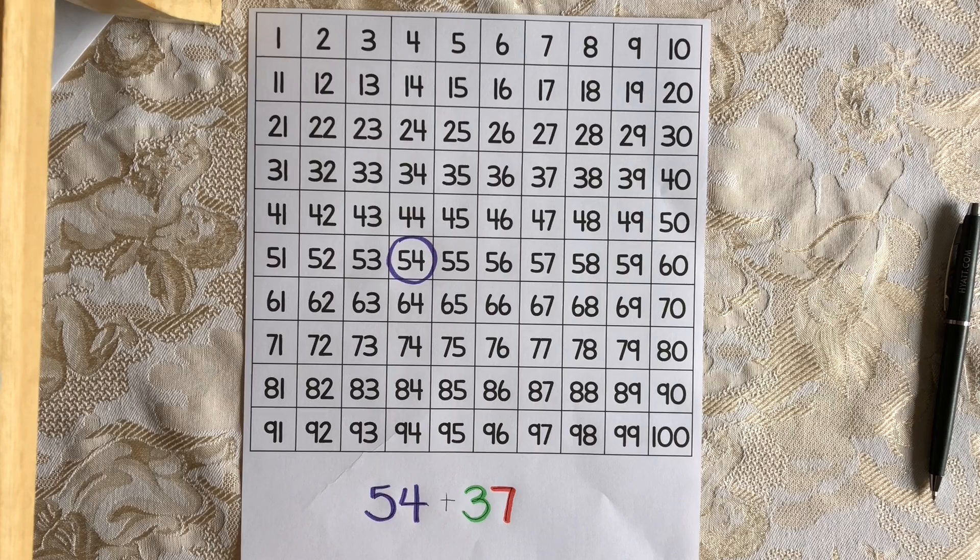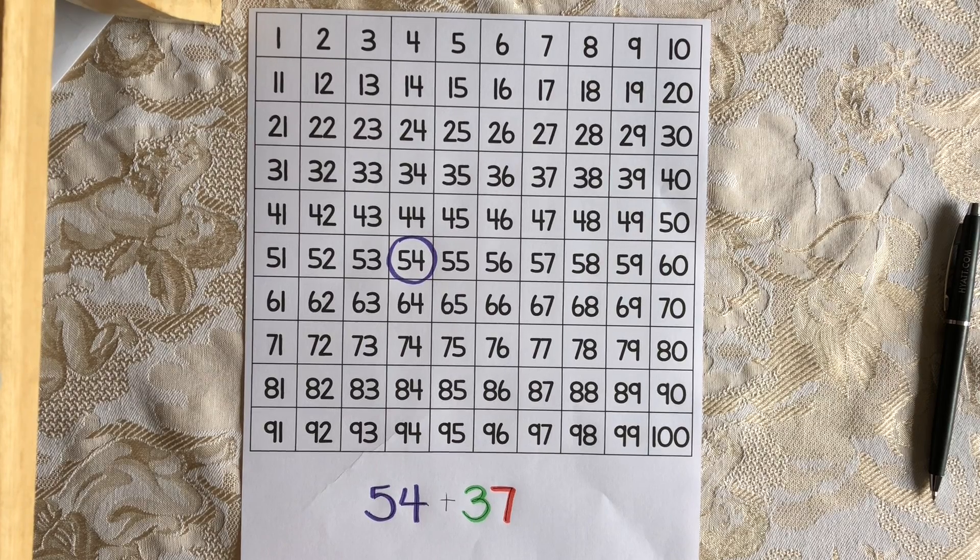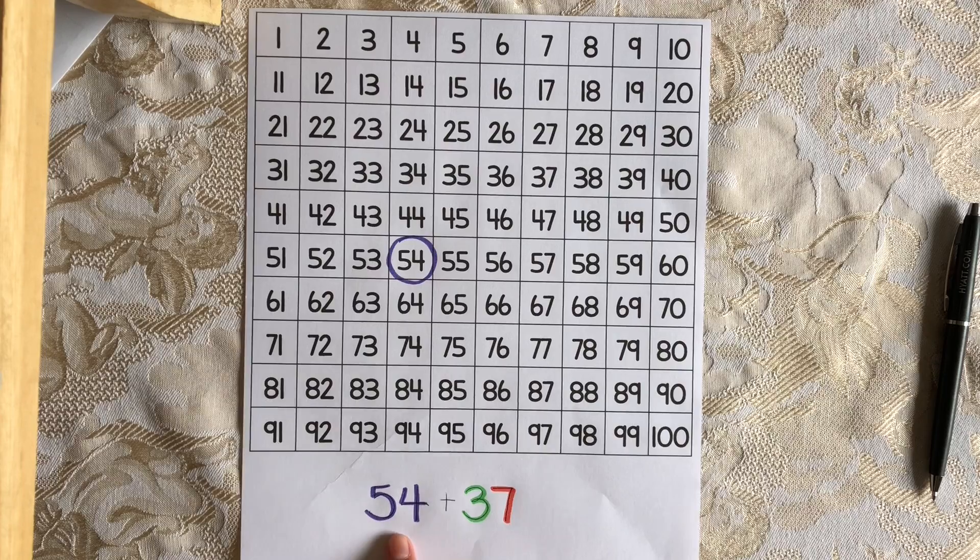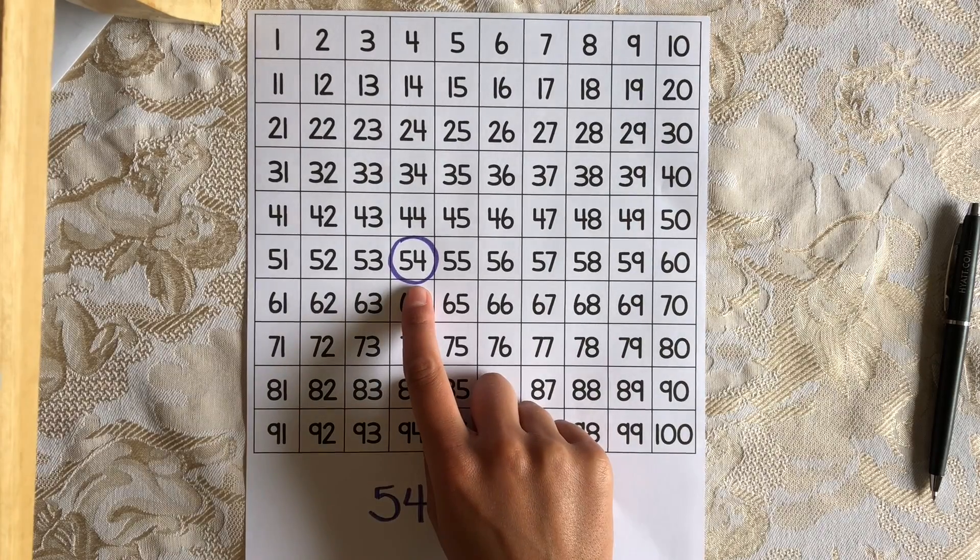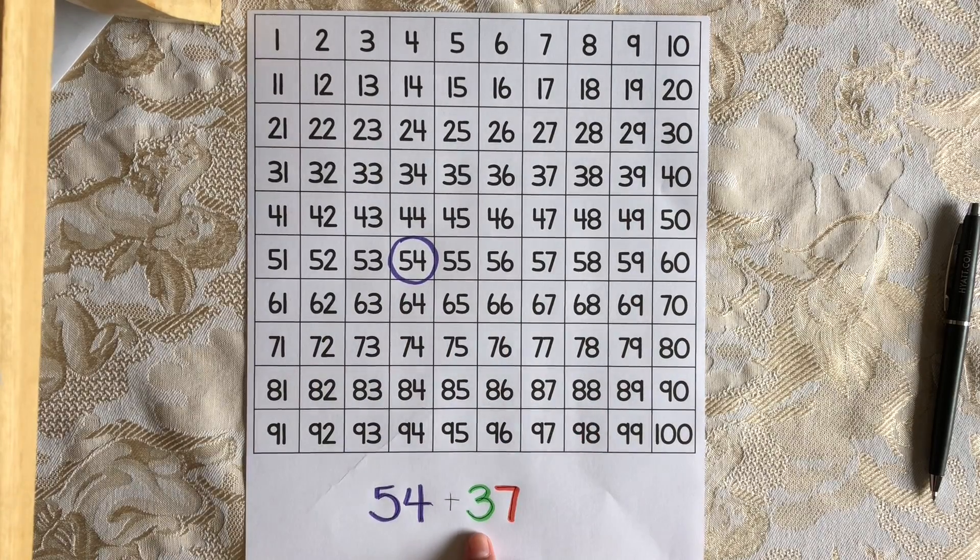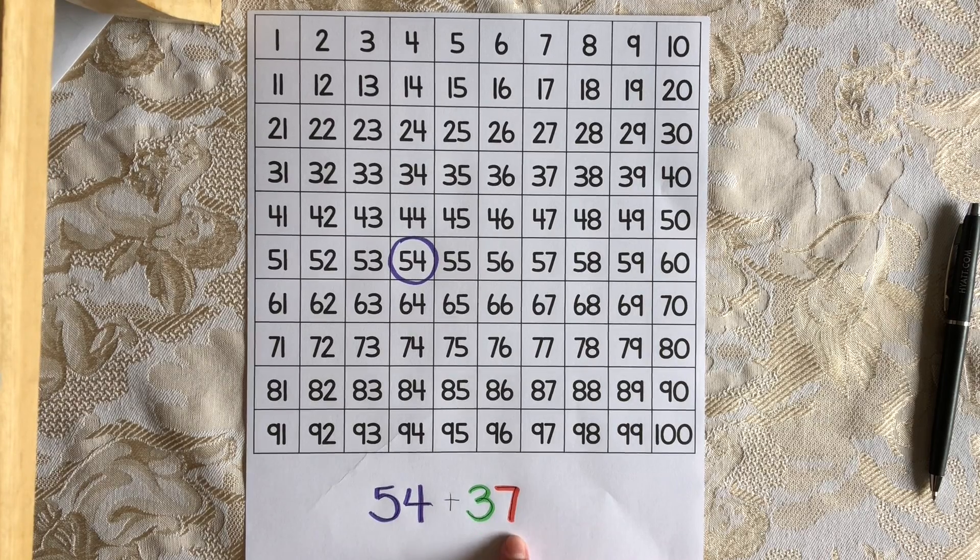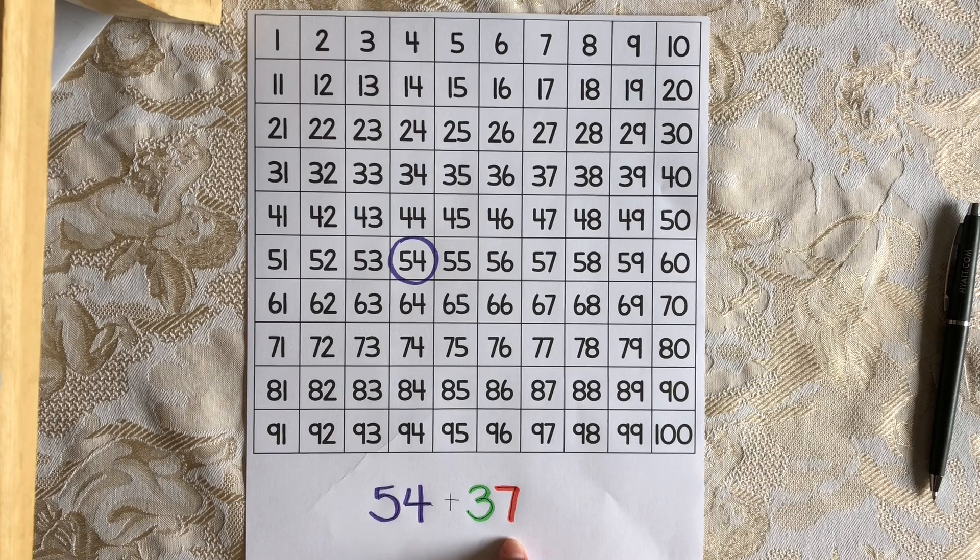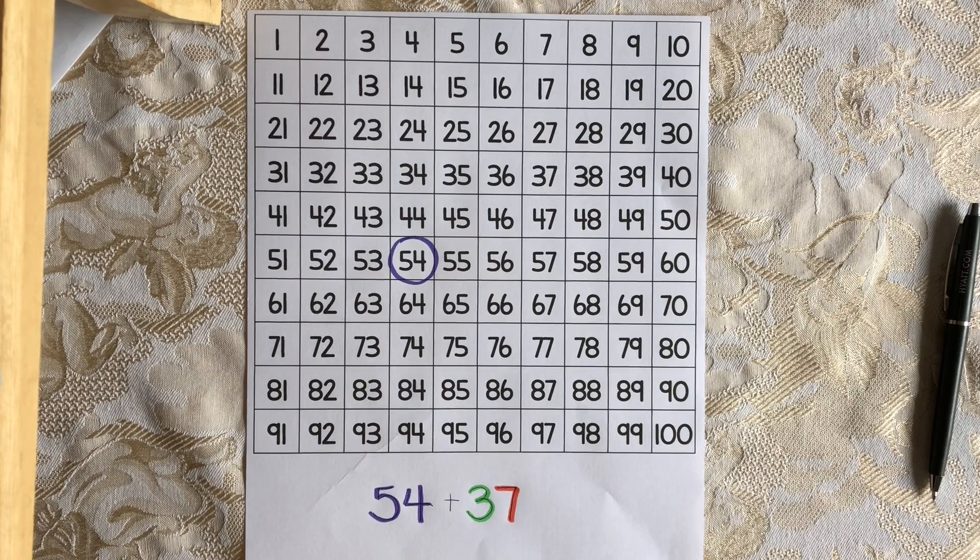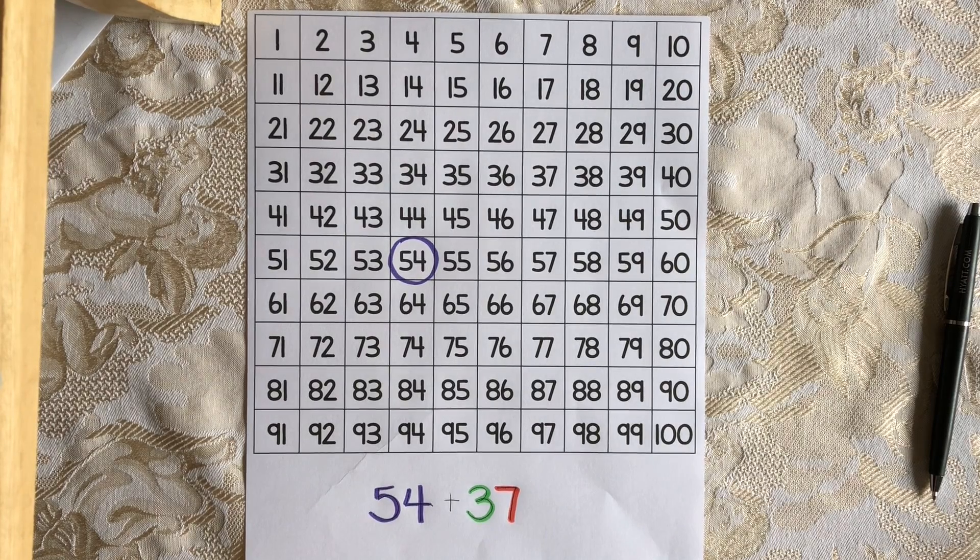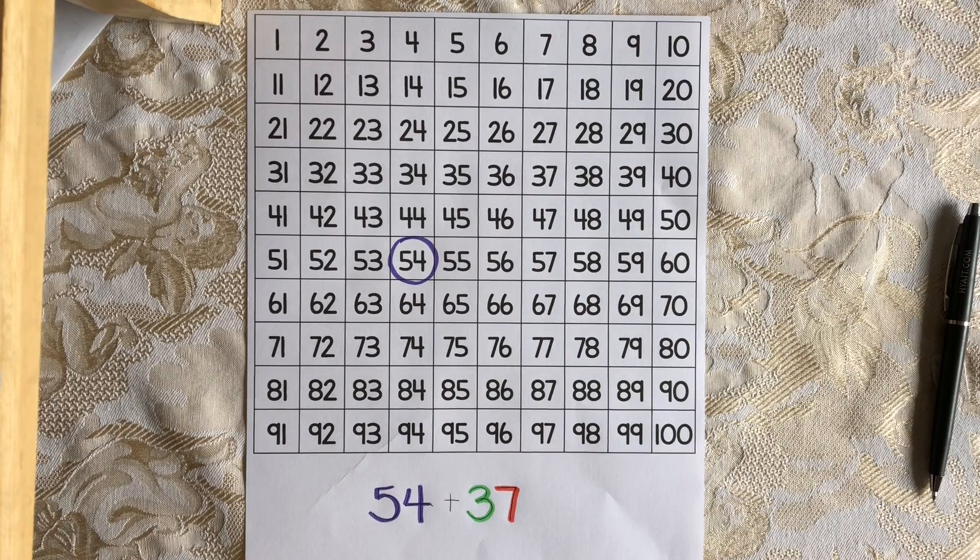Let's solve 54 plus 37 on the hundreds chart. So I'm going to start with the bigger addend first on the hundreds chart, which is 54, and I've already circled it here. Now I'm going to look at my second addend, which is what I'm adding on, 37. That's three tens and seven ones. Remember when you add a 10 on the hundreds chart, all you have to do is move down.